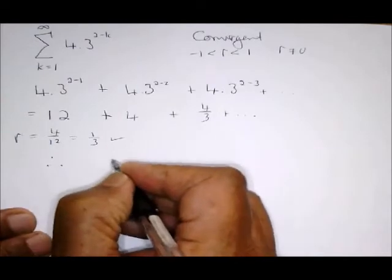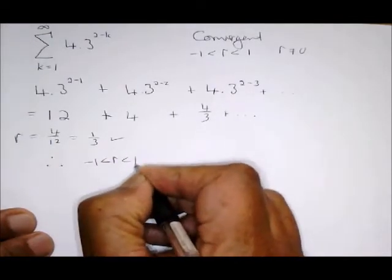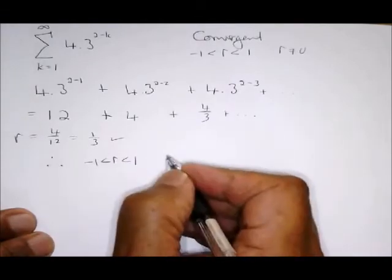So therefore your conclusion is that r is between minus one and plus one. It is definitely a third, so therefore the series is convergent.